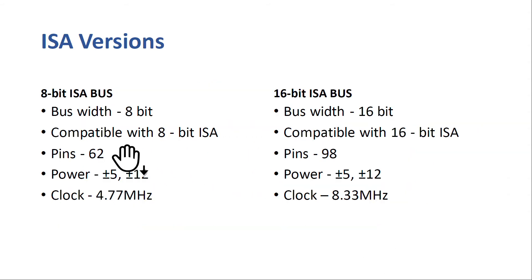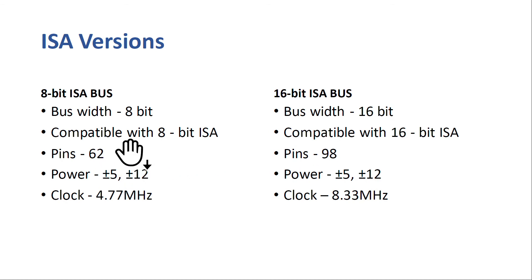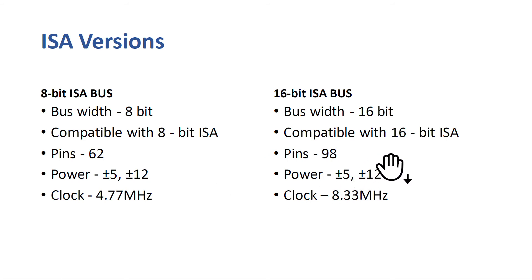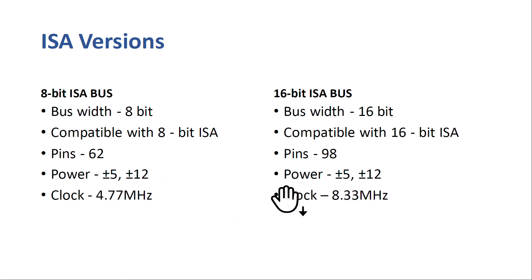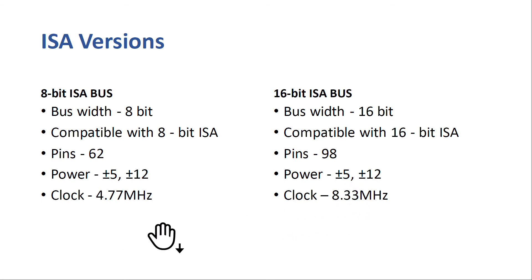There are two ISA versions: the 8-bit version, which was launched first, and the 16-bit version, which is the standard protocol. The 8-bit has a bus width of 8 and is compatible with 8-bit ISA; it has 62 pins and a clock speed of 4.77 MHz. The 16-bit has a bus width of 16, is compatible with 16-bit ISA, has 98 pins, and a clock speed of 8.33 MHz. Both versions have the same power supply.